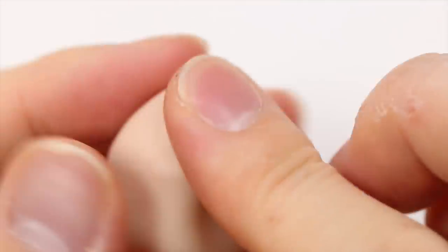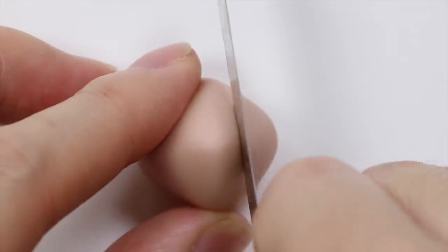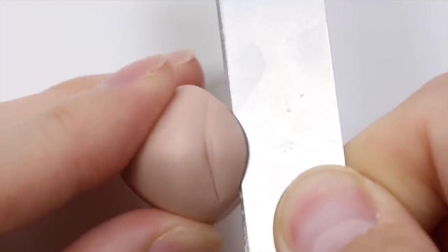So first we're gonna make the milk gallon template. I'm taking some scrap clay and I'm pinching it into a rectangle shape. At the very top I'm shaping it to bake it into a pyramid and then rounding off the corners. And then I'm taking my blade and I'm cutting just a little corner, a little less than half of the milk carton off.